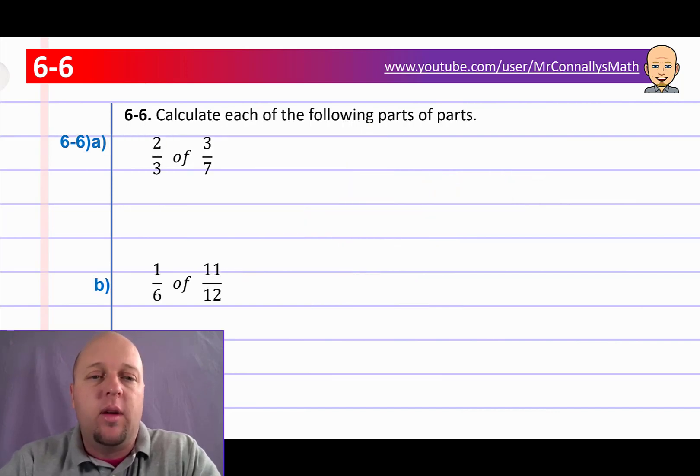Six-six. Calculate each of the following parts of parts. So we've got two-thirds of three-sevenths. Okay, we know that of means times. So let's just change that to multiplication. And remember, when we're multiplying fractions, you multiply the top by the top and the bottom by the bottom. So let's multiply the numerators first. Two times three. I hope you know what that is. I'll give you a hint. It's six.